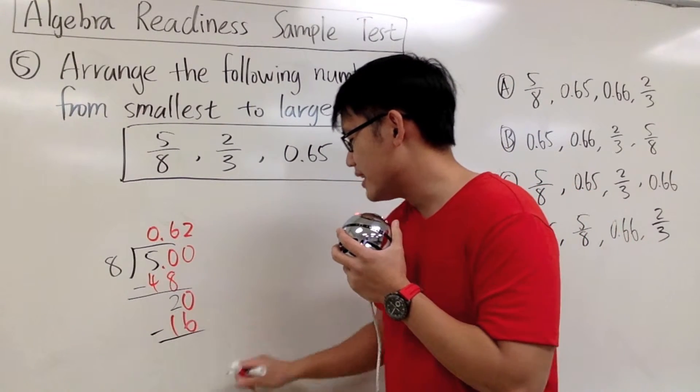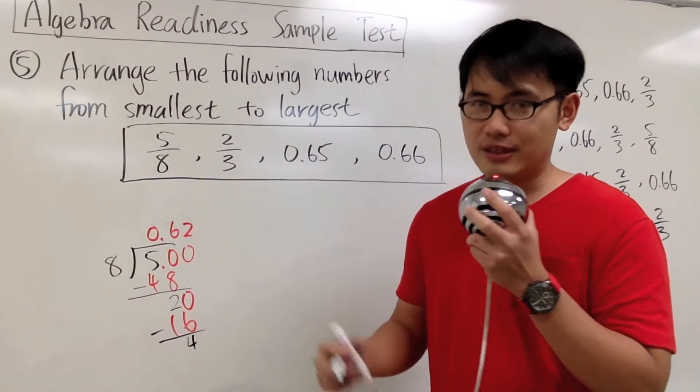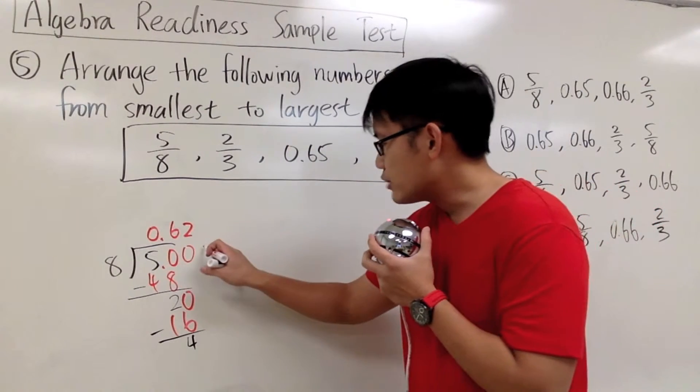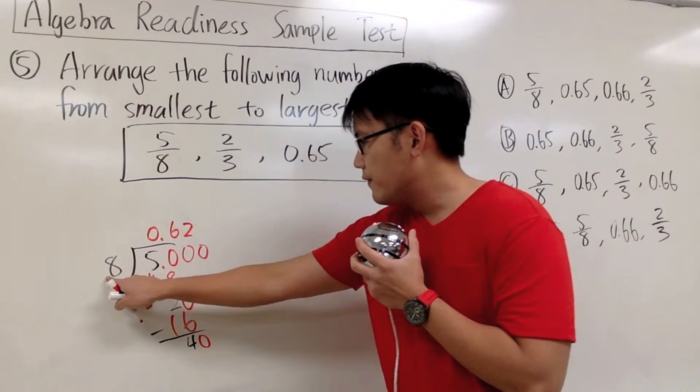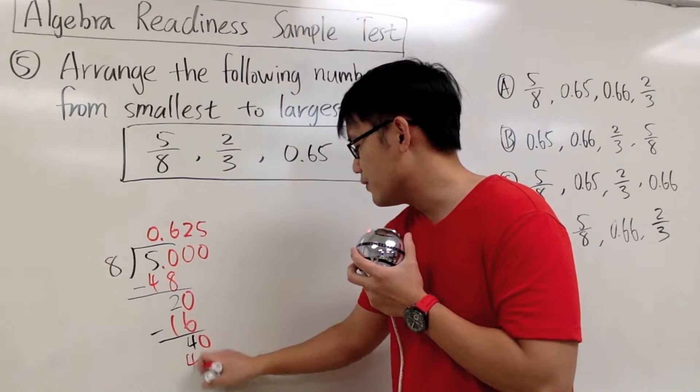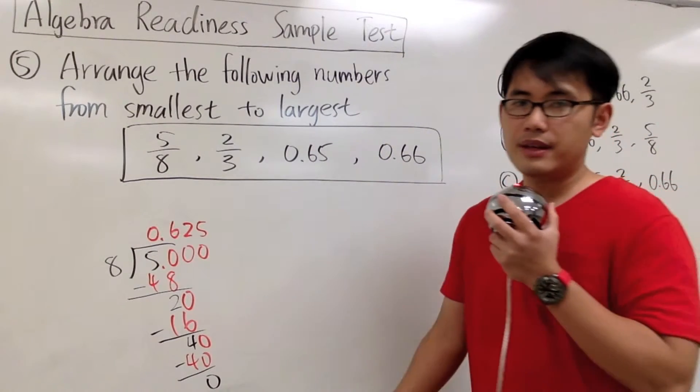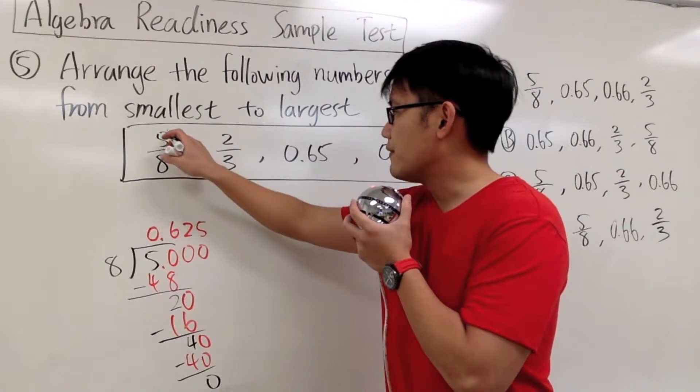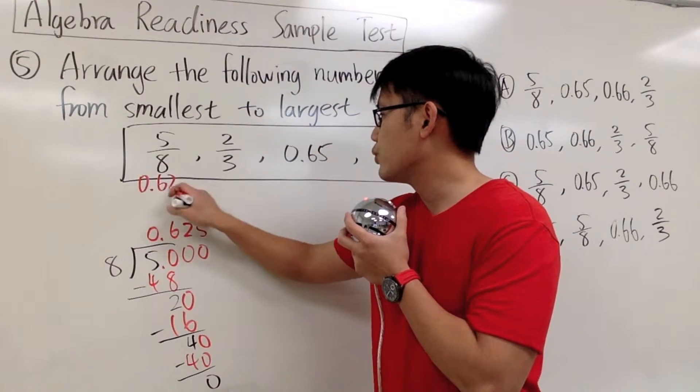So we can look at the question as, 8 goes into 20, how many times? The answer to that will be 2 times. 2 times 8 is 16. 20 minus 16 will give us 4. And we can actually finish this up. Attach another 0 here, drag this 0 down here. 8 goes into 40, 5 times. 5 times 8 will give us 40. And now we'll have no remainder. We are done. So in another word, we know that 5 over 8 is the same as 0.625.